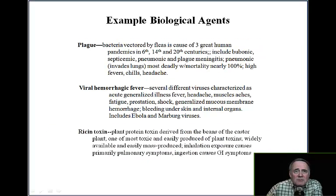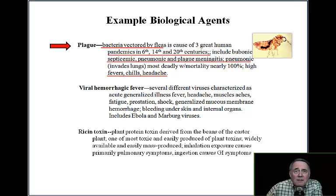Three other examples of biological agents include the Plague. This is a bacteria vectored by fleas and is the cause of three great human pandemics in the 6th, 14th, and 20th centuries. It includes bubonic, septicemic, pneumonic, and plague meningitis forms. Pneumonic plague invades the lungs and is the most deadly, with mortality nearly 100%. Symptoms include high fevers, chills, and headache.